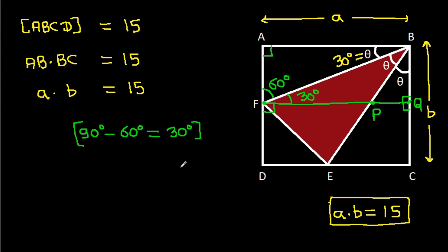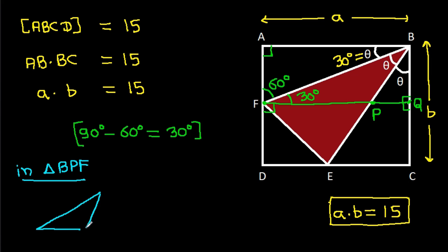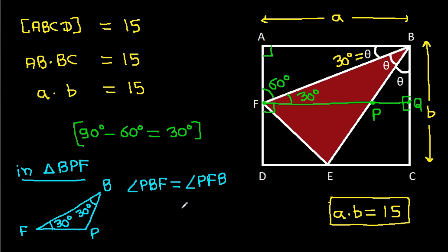In triangle BPF, angle BPF is 90 degrees, angle PBF is theta which is 30 degrees, and this angle is also 30 degrees. So angle PBF equals angle PFB equals 30 degrees, meaning triangle BPF is isosceles. Therefore PB equals PF — suppose each equals X. So PB is X and PF is X.